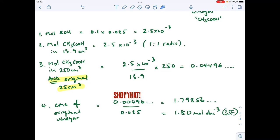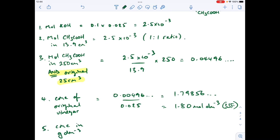That's given me a calculator value for the concentration of 1.79856, a few numbers after that as well. To three significant figures, which is appropriate here, 1.80 moles per decimeter cubed. And the final thing, got to turn that into a concentration but in grams per decimeter cubed.